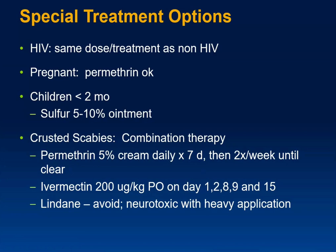With HIV, if we're talking about crusted scabies, it's the same dose and treatment as non-HIV unless it's crusted. In pregnancy, permethrins are okay, but do not use organophosphates — no malathion or similar agents. For kids under two months of age, there is a sulfur ointment that can be used, and it's pretty effective.